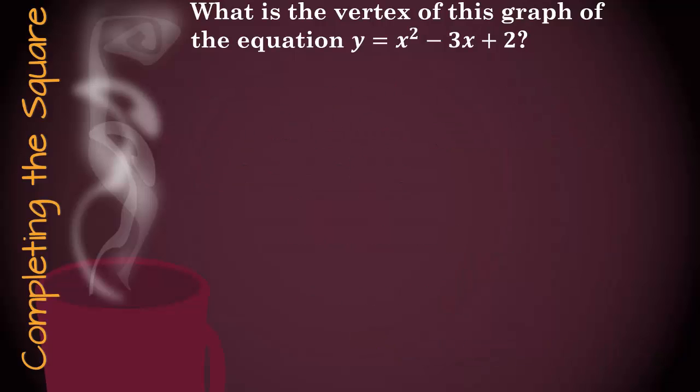So let's first start with completing the square. When we do completing the square, what we're really trying to do is solve so that we have y equals a times x minus h squared plus k, where h, k is my vertex. So let's get started.